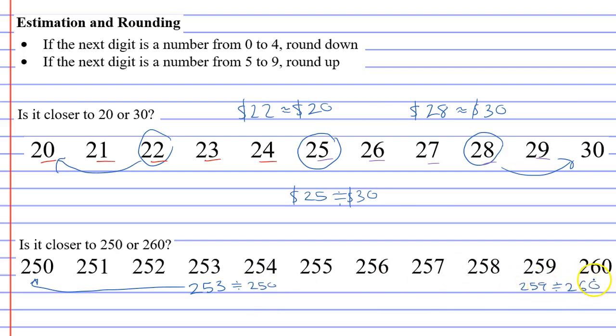If I had the number 259 I would say it's approximately equal to 260. And of course if you've got 255 you would round up, you would say it's approximately equal to 260.